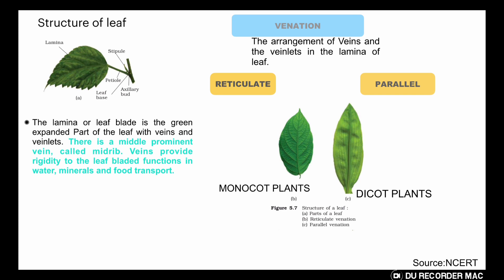The lamina has veins and veinlets. There is a prominent ridge — a line you can see — running through the middle called the midrib or main vein. Veins provide rigidity to the leaf and also function in the transport of water, minerals, and food throughout the plant. The branches of veins are called veinlets.